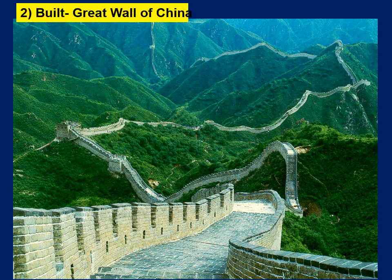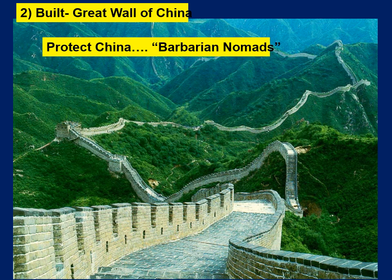One of the major achievements was building the Great Wall of China. It was built first to protect China from nomadic Mongolian invaders. At the time there were several smaller empires, and they decided to unite under one kingdom — the Qin Dynasty — which initiated construction of the wall to provide protection against Mongolian invasion.